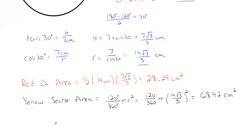And thus, as I showed before, the blue area, the blue area, which we are looking for is just going to be that yellow area subtracting off my red area. So it's going to be 68.42 centimeters squared, subtracting off 28.29 centimeters squared. And that gives me 40.13 centimeters squared as a rounded off answer to this particular question. And that's one way in which you could solve this problem.